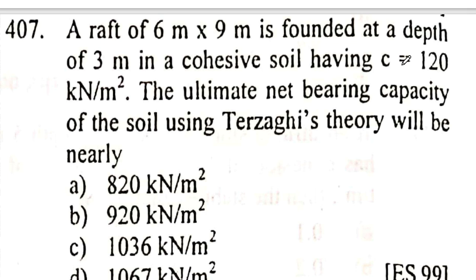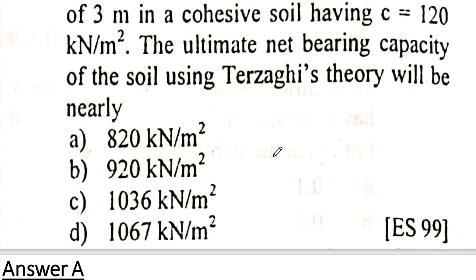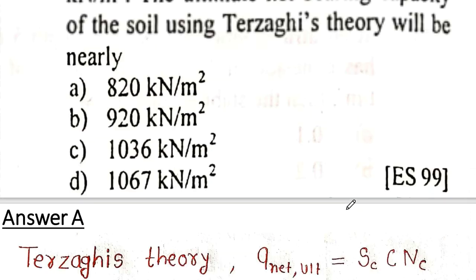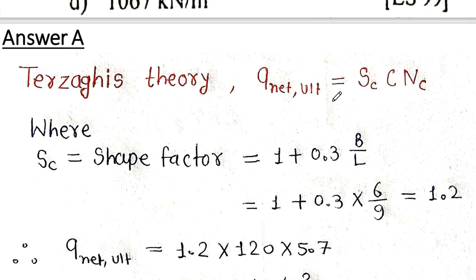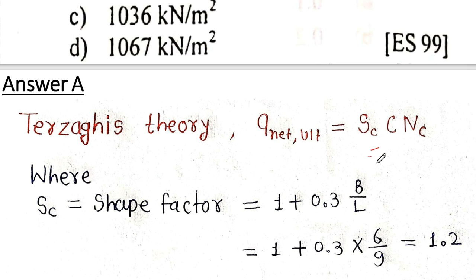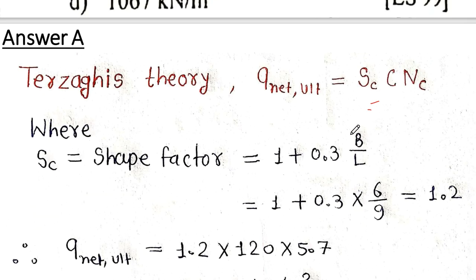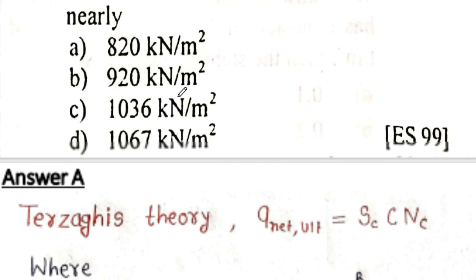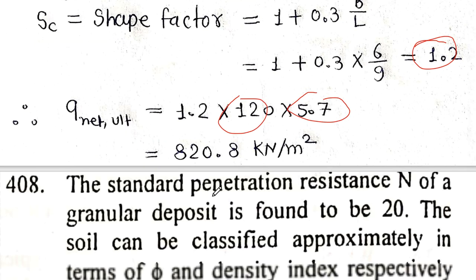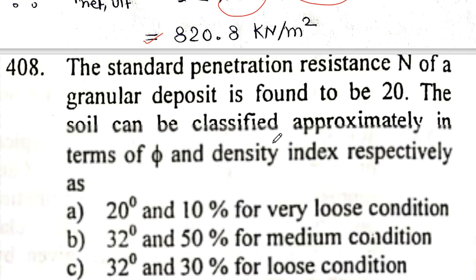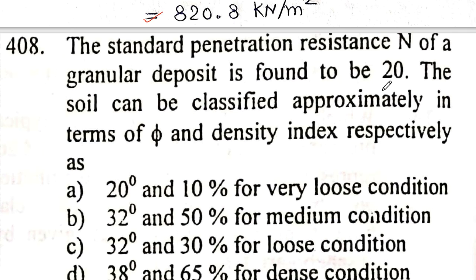Next question: a rough 6m × 9m foundation at a depth of 3m, cohesion value given. Find ultimate net bearing capacity using Terzaghi's equation. For cohesive soil, the formula is q_net = c·Nc·sc. The shape factor sc equals 1 + 0.3·(B/L) = 1 + 0.3×(6/9) = 1.2. With c = 120 and Nc = 5.7, the result is 820.8 kN/m². Option A is correct.